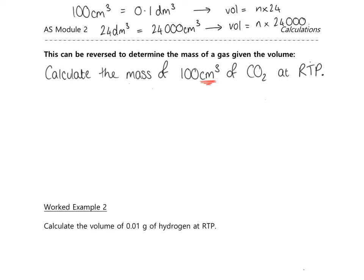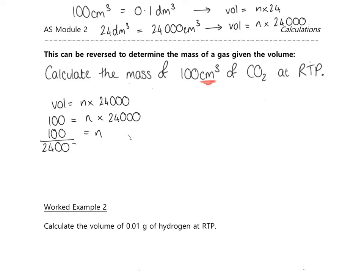In this case, we start with volume = n × 24,000 since our volume is in cm³. Our volume of CO₂ is 100 cm³, and we're trying to work out the number of moles. So 100 = n × 24,000, which rearranges to n = 100 ÷ 24,000 = 0.004167 moles.